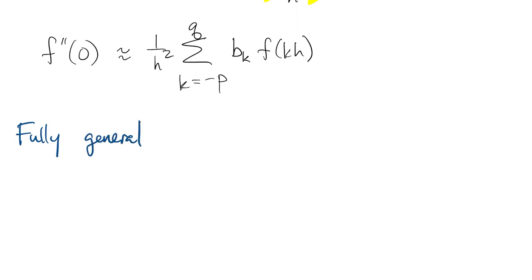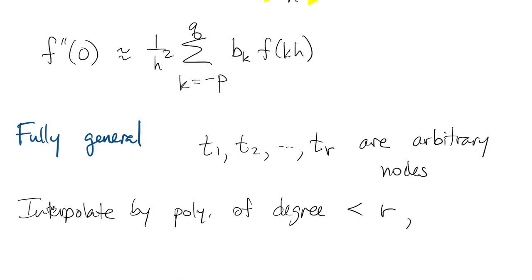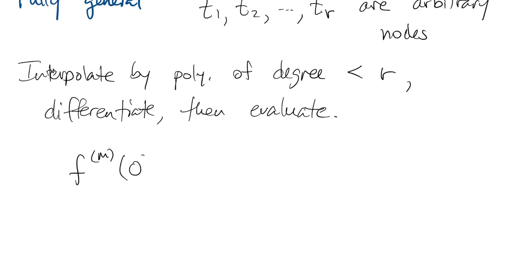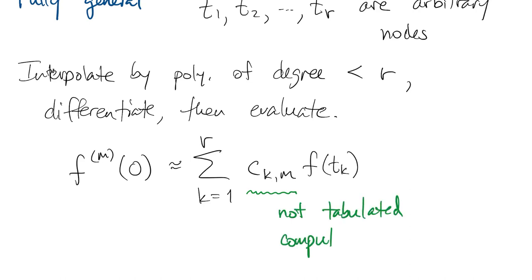The most general situation is to have a collection of r nodes with non-uniform or arbitrary spacing. We repeat the same process of interpolating by a polynomial, differentiating the interpolant, and then evaluating the result. There's no longer any sensible definition for h, so we just write a linear combination of values at the nodes. Since basically anything can happen with nodes, you can't really tabulate these weights. But there is a pretty simple recursion for computing them, and that's implemented by a function in the book.